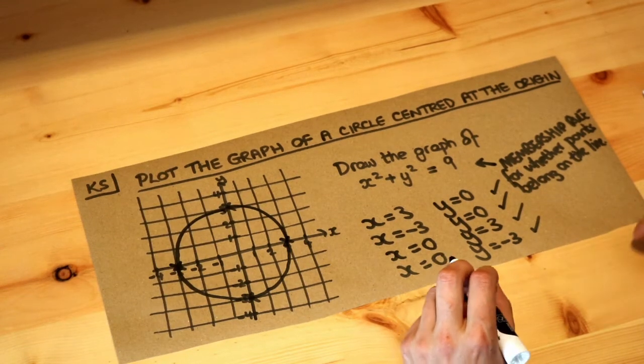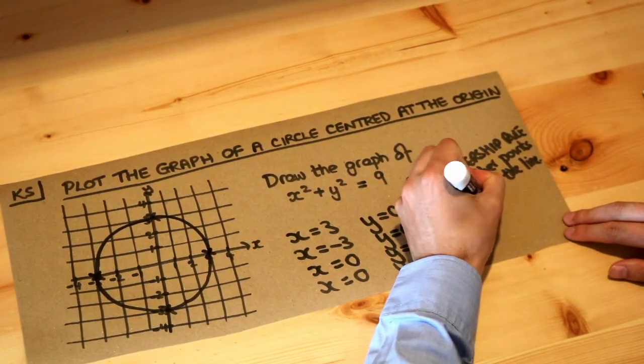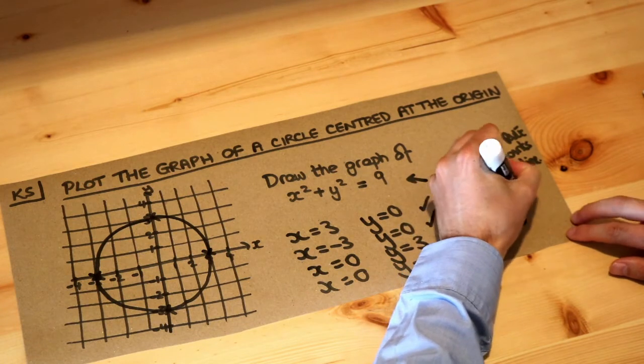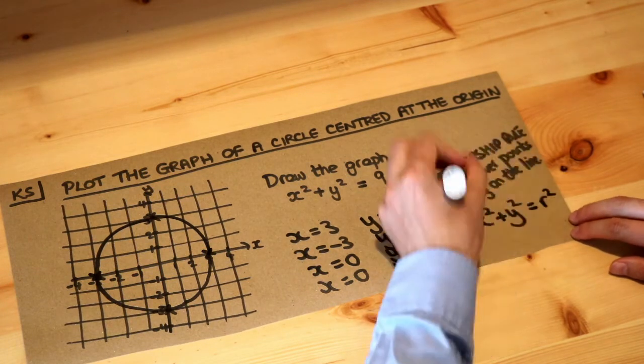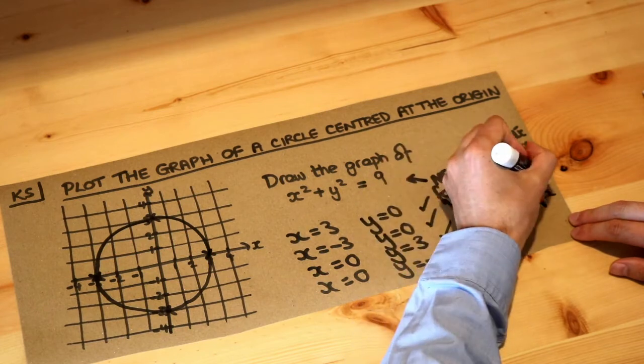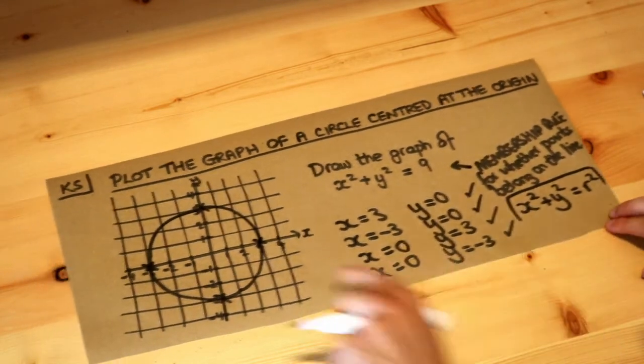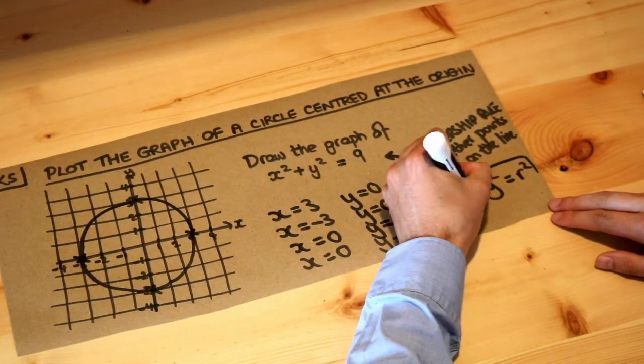Now the easy way to sketch in general is that if you had the equation x squared plus y squared is equal to r squared, that's the general equation of a circle that's centered at the origin. So the center of this circle